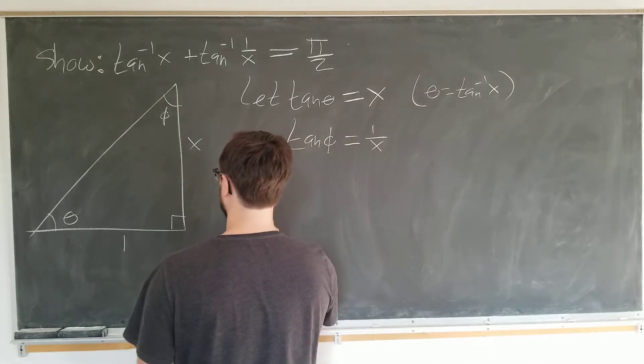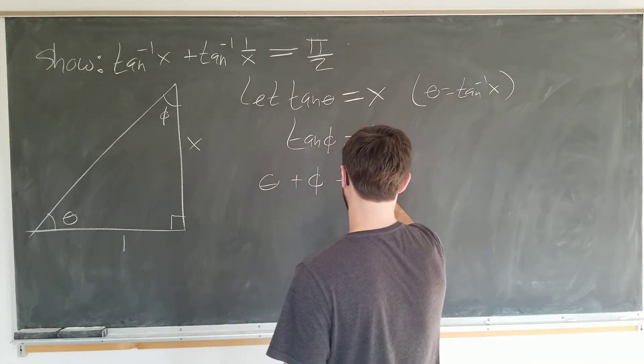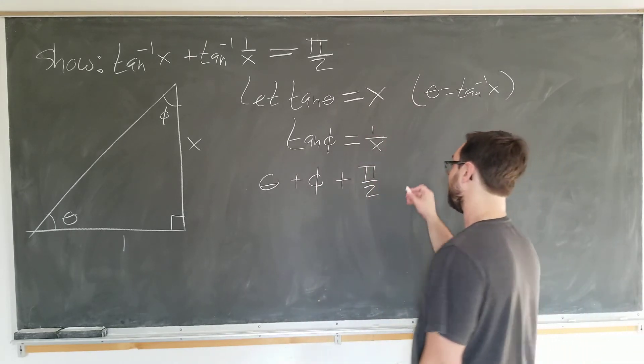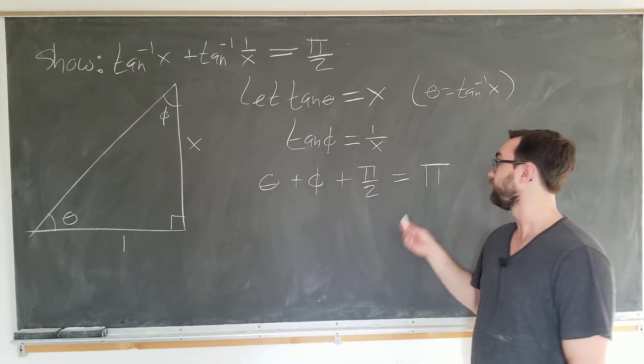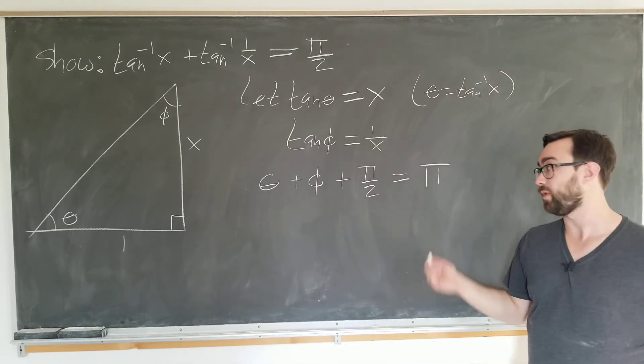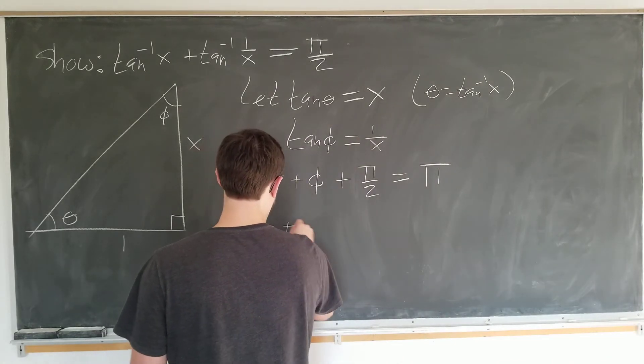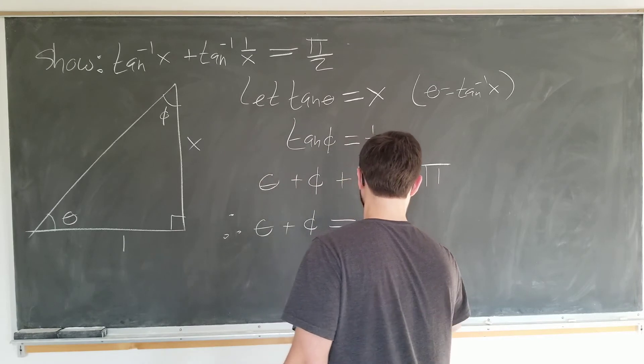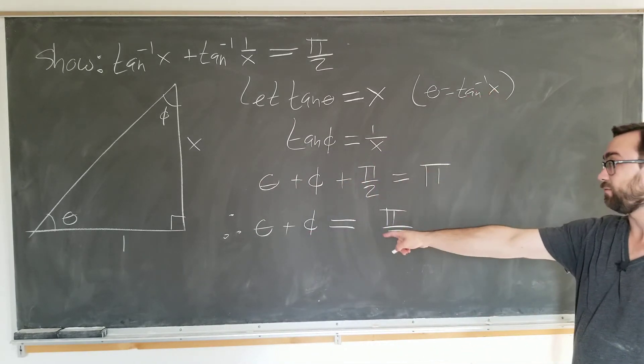So now we know that theta plus phi plus pi over 2, which is 90 degrees, of course, has to be equal to 180 degrees or pi. So we can subtract pi over 2 from both sides to obtain theta plus phi is equal to pi over 2. And we are done here, since we just plug in what theta and phi are.